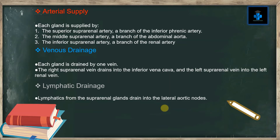Venous drainage: Each gland is drained by one vein. The right suprarenal vein drains into the inferior vena cava and the left suprarenal vein drains into the left renal vein. Lymphatic drainage: Lymphatics from the suprarenal glands drain into the lateral aortic nodes.